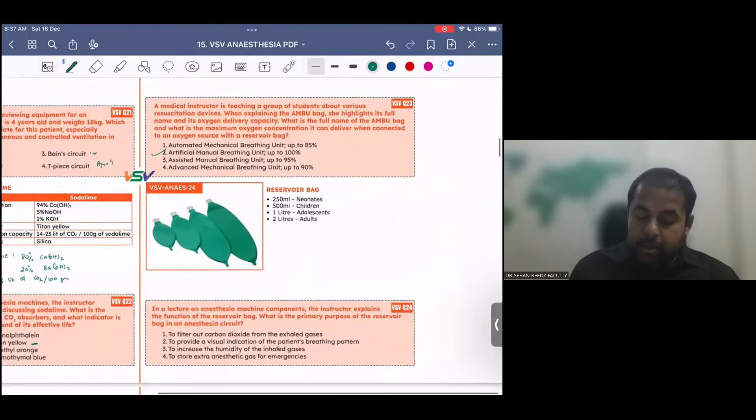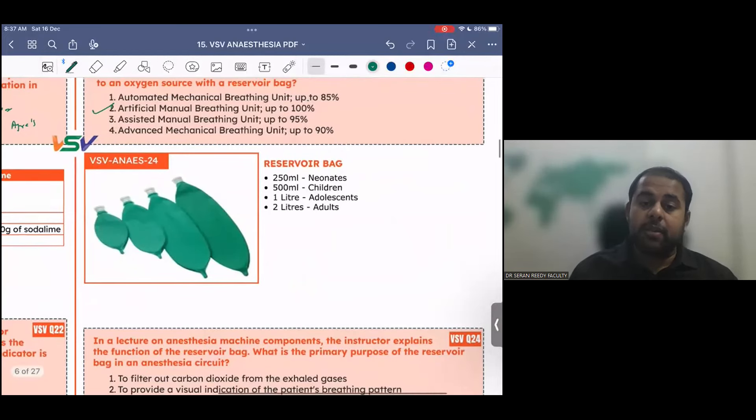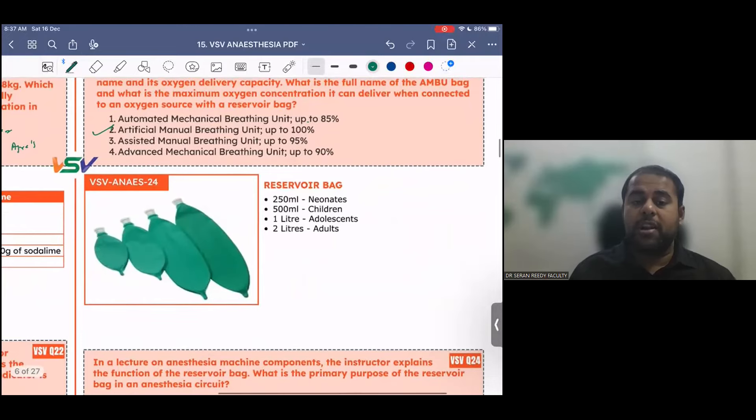This is reservoir bags. There are usually four sizes, 250 ml for neonates, 500 ml for children, 1 liter for adults, and 2 liters for adults. What is the use of this? During spontaneous ventilation, whether the patient is breathing or not, you can visually see, based on this reservoir bag. And among the controlled ventilation also, once you keep it, how the bag is moving, it helps giving an idea whether the patient is breathing or not.